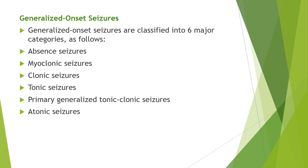Generalized onset seizures are classified into six major categories: absence seizures, myoclonic seizures, clonic seizures, tonic seizures, primary generalized tonic-clonic seizures, and atonic seizures. We will discuss these types.